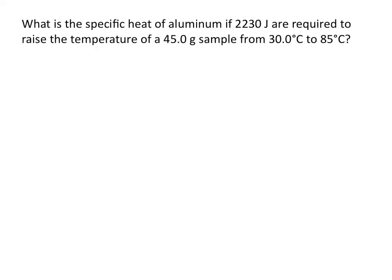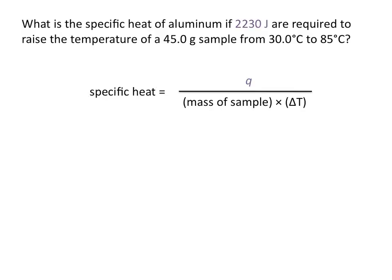Let's look at another example. What is the specific heat of aluminum if 2,230 joules are required to raise the temperature of a 45 gram sample from 30 degrees Celsius to 85 degrees Celsius? We'll use the same equation, but this time solve for specific heat. We rearrange to get: specific heat equals Q divided by mass divided by delta T.